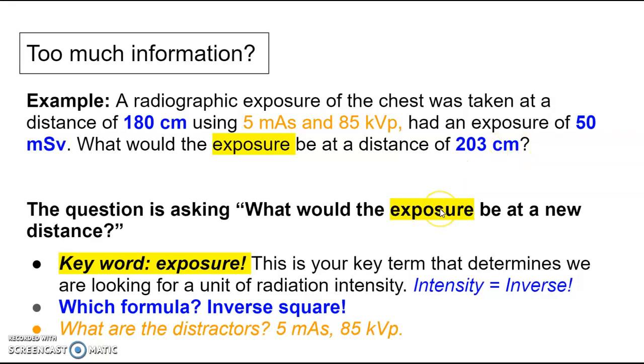So I read the last sentence. I go back to the last sentence. What would be the exposure at 203 centimeters? This question is asking me exposure. It's not asking me for a new mAs. It's asking me exposure. And it has an exposure one of 50 millisieverts. And it has a distance one and a distance two. So anytime it's asking me either exposure, or it might be the word intensity here, that is going to be inverse square law. And I always think intensity, inverse. So it could be millisieverts, it could be sieverts, it could be gray, whatever they decide to use. But what formula are you going to use to figure this question out? You're going to use the inverse square law.